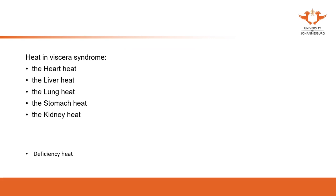Heat in the body can be viewed from the four levels, and also from the view of zhangfu organs. In different zhangfu organs, the patient may present with different symptoms relating to common symptoms of that organ. For example: the heart — insomnia, palpitation, irritation; the liver — red eyes, sore eyes, irritation, depression; the lung — coughing. These are common symptoms of these individual organs.